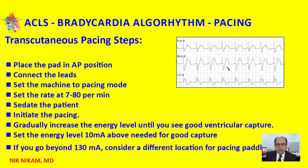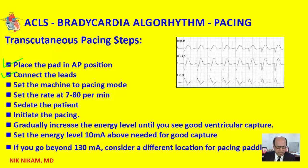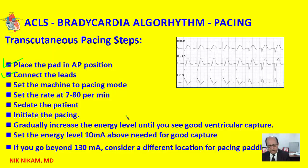Here are some things to consider when using a transcutaneous pacemaker. We place the paddles — one in front and one behind — to get the maximum electrical impulse traveling through the myocardial tissue. We connect the paddles to the defibrillator machine, set the machine to pacing mode, set the rate at 70 per minute, sedate the patient, initiate the pacing, then gradually increase the energy level delivered until we see good ventricular capture, as seen in this tracing.